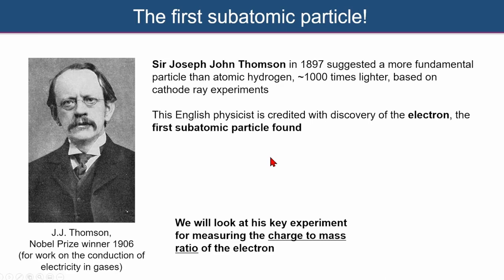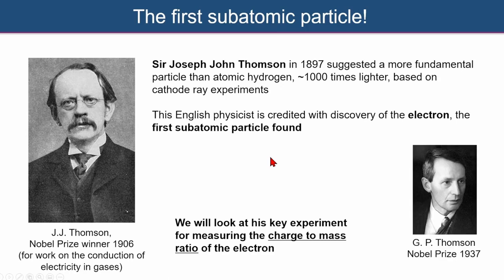So we'll look in this video at how to measure the charge to mass ratio of these subatomic particles called electrons. And just quickly, as a historical note, J.J. Thomson's son was George Padgett Thomson, who received the Nobel Prize in 1937 for electron diffraction. And so that was following on from a postulate by Louis de Broglie. So that's a very interesting story in quantum mechanics available in other videos.